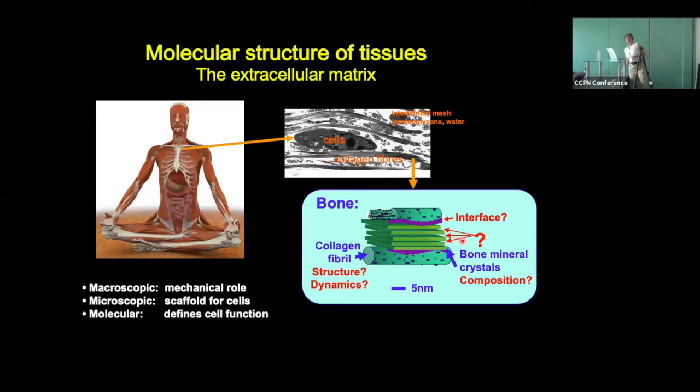So why solid-state NMR? My research group studies the extracellular matrix of tissues, and that is essentially the bulk material that's around the cells in all of our structural tissues, like bone, cartilage, tendon, and so on.